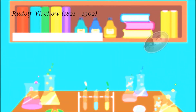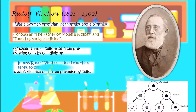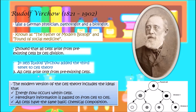Rudolf Virchow was a German physician, pathologist, and biologist, known as the father of modern pathology and founder of social medicine. In 1855, he added the third tenet to cell theory: all cells arise only from pre-existing cells, by cell division. The modern version of cell theory also includes: energy flow occurs within cells, hereditary information is passed from cell to cell, and all cells have the same basic chemical composition.